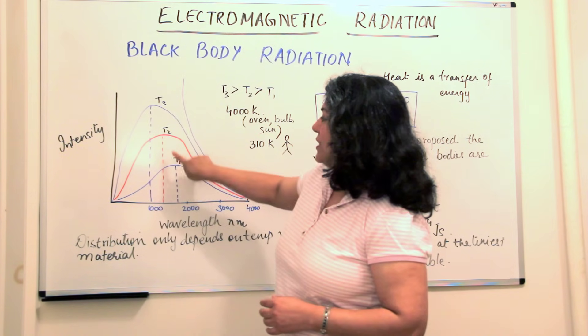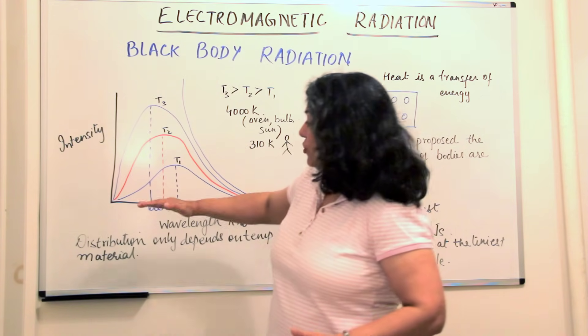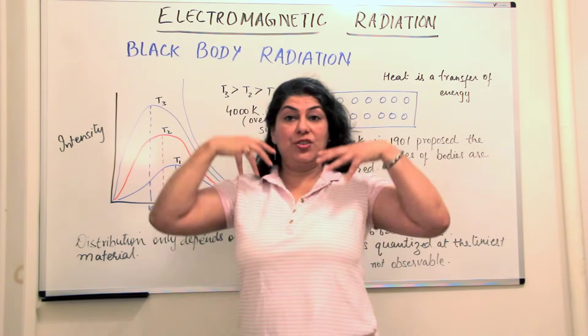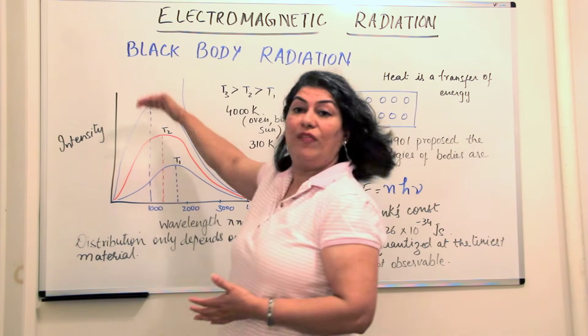T1 was a lower temperature, T2 was higher than T1, and T3 was still higher. So the intensity of radiations being given out by the black body increased with increase of temperature.